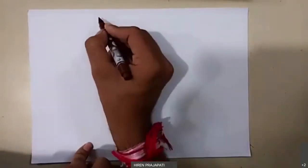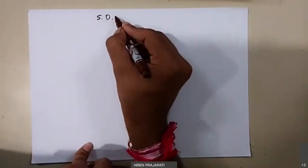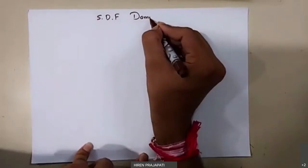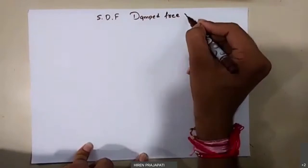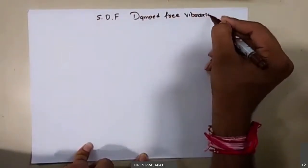In our previous session, we solved problems of single degree of freedom type with more than one mass or spring element, deriving governing equations of motion and natural frequency for those systems. That was the case of free vibration without any damping. Today we are introducing damping in the system. Our today's topic is single degree of freedom damped free vibration.